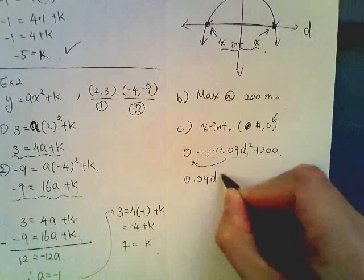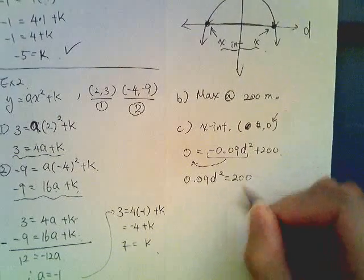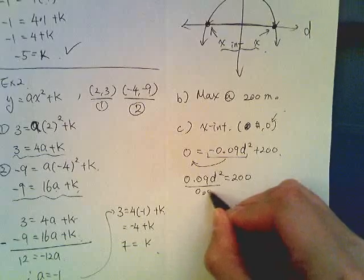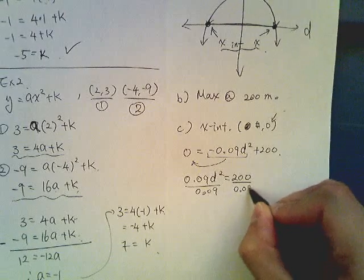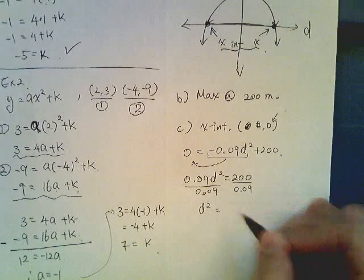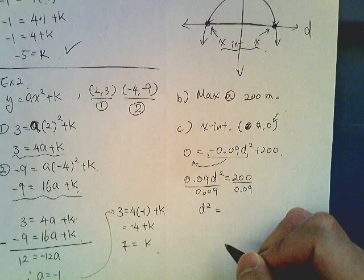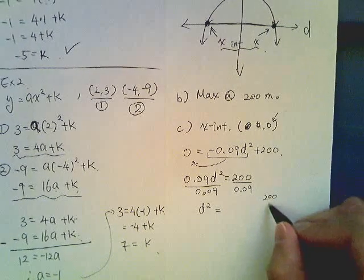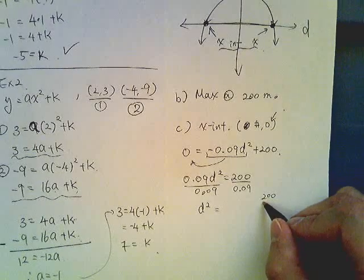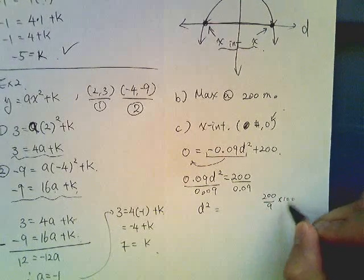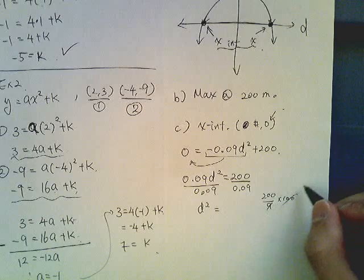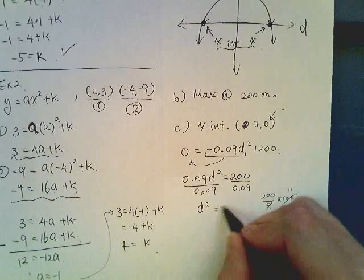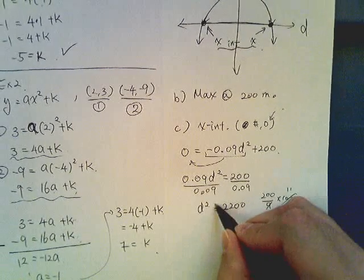So divide everything by 0.09 and then d squared equals 200 divided by 0.09. So divided by 9 times 100, well this is about 11-ish, so I'll say it is approximately 2200.